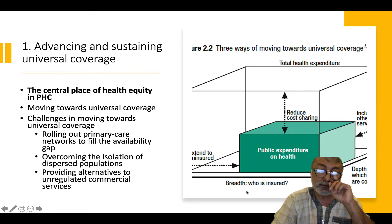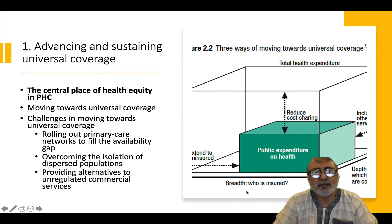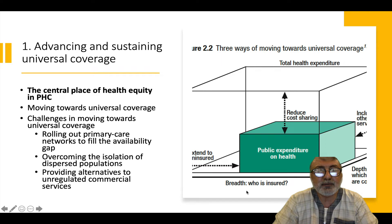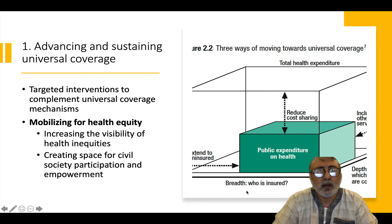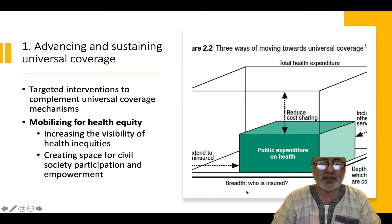Quality also needs to improve in terms of service. In moving towards universal coverage and specifically primary health care, there is the challenge of rolling out primary health care networks and overcoming the isolation of dispersed rural populations, including the private sector in this. This includes targeted interventions, mobilizing for health equity, increasing the visibility of health inequities, and creating space for social participation and empowerment.